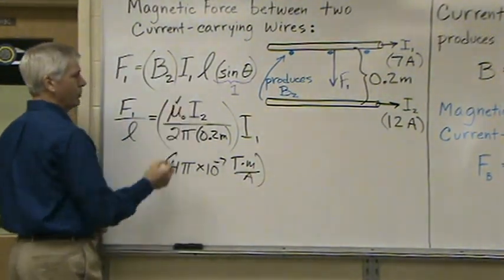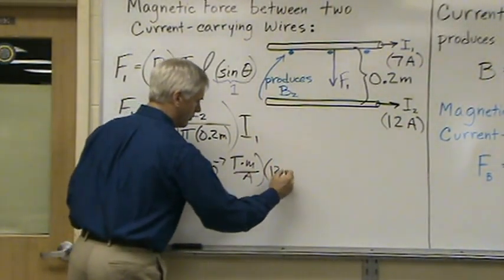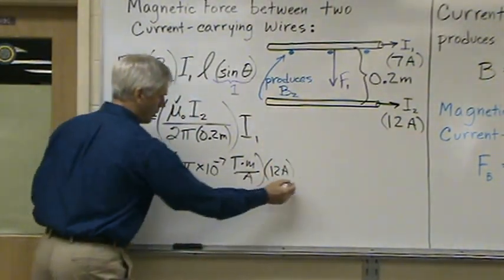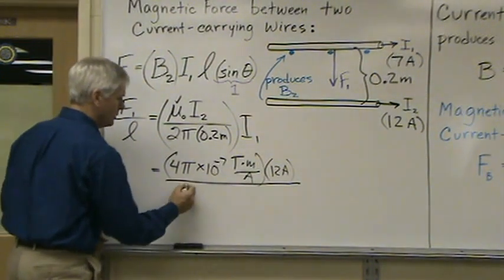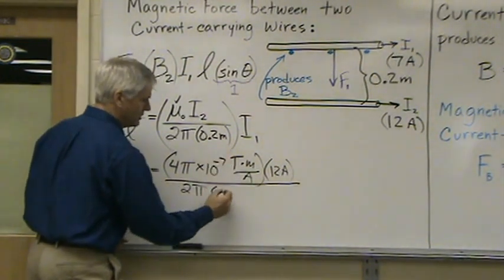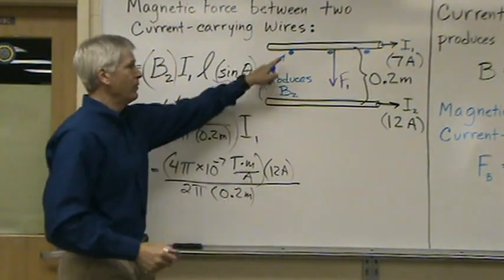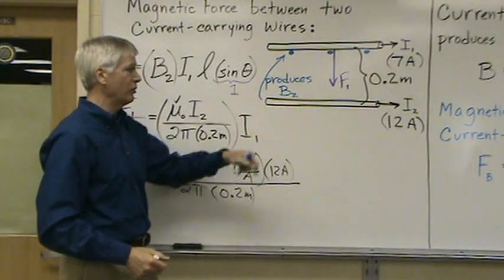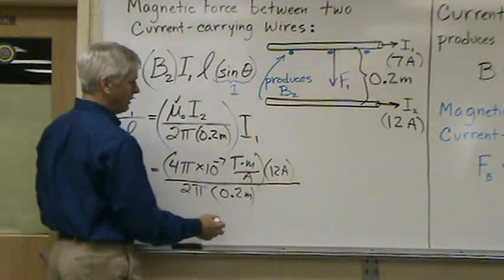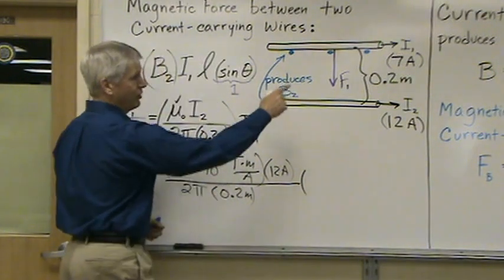So that's this term. I2 is given as 12 amps. Divide that by 2π times the distance between the field location and wire 2. And then multiply the whole thing by current 1, which is 7 amps.